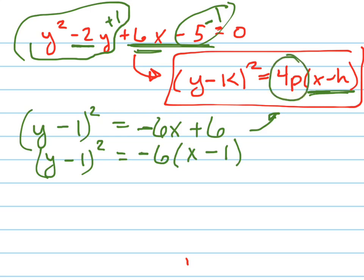Now, I need to find out what p is. Well, 4p equals negative 6. So let's make a little algebra problem over here. 4p equals negative 6. What is p? p equals negative 3 halves.